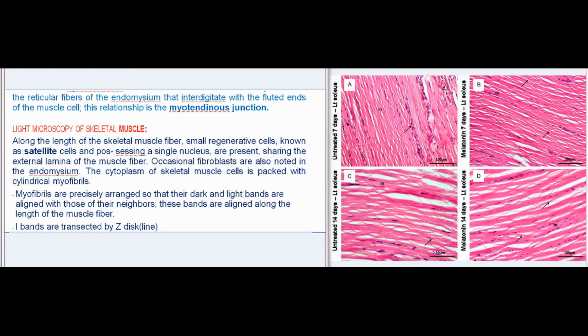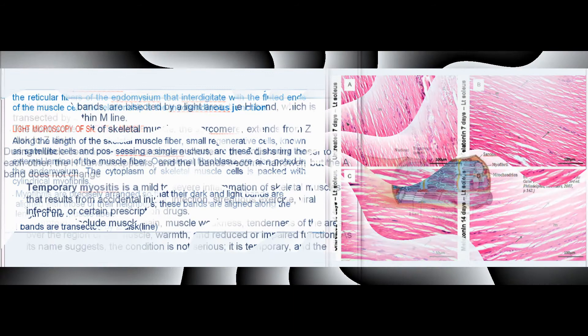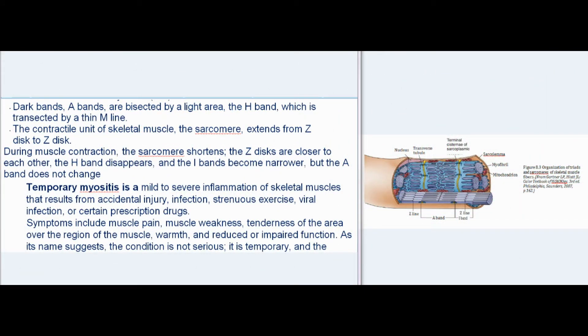The cytoplasm of skeletal muscle cells is packed with cylindrical myofibrils. Myofibrils are precisely arranged so that their dark and light bands are aligned with those of their neighbors along the length of the muscle fiber. I bands are transected by Z-discs; dark bands, A bands, are bisected by a light area, the H band, which is transected by a thin M line. The contractile unit of skeletal muscle, the sarcomere, extends from Z-disc to Z-disc. During muscle contraction, the sarcomere shortens, the Z-discs are closer to each other, the H band disappears, and the I bands become narrower, but the A band does not change.